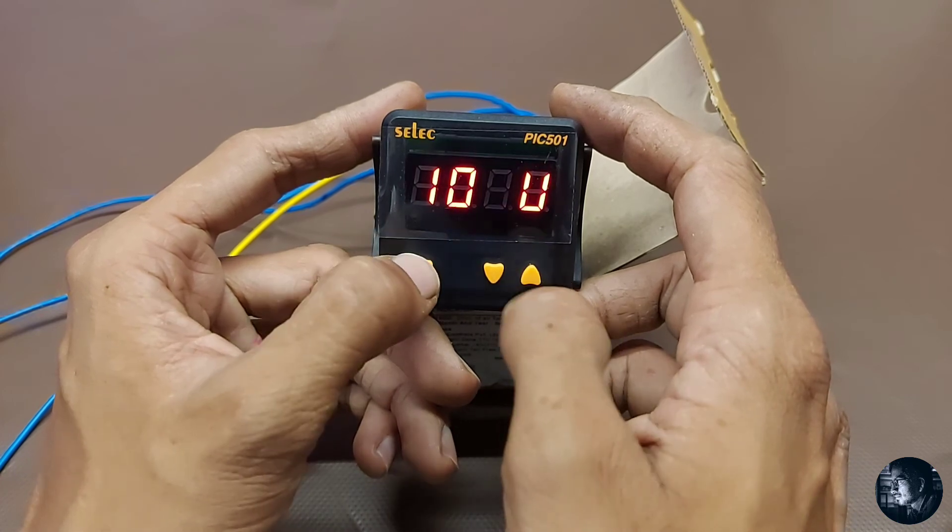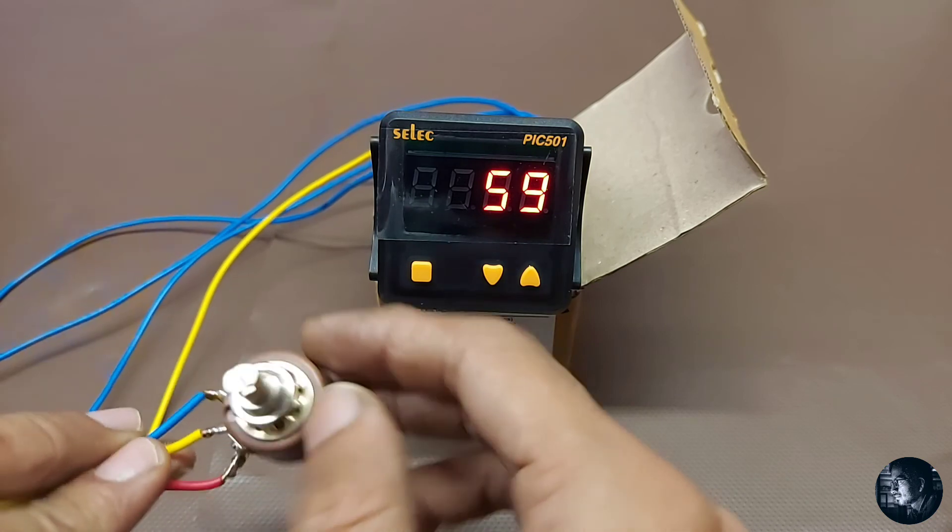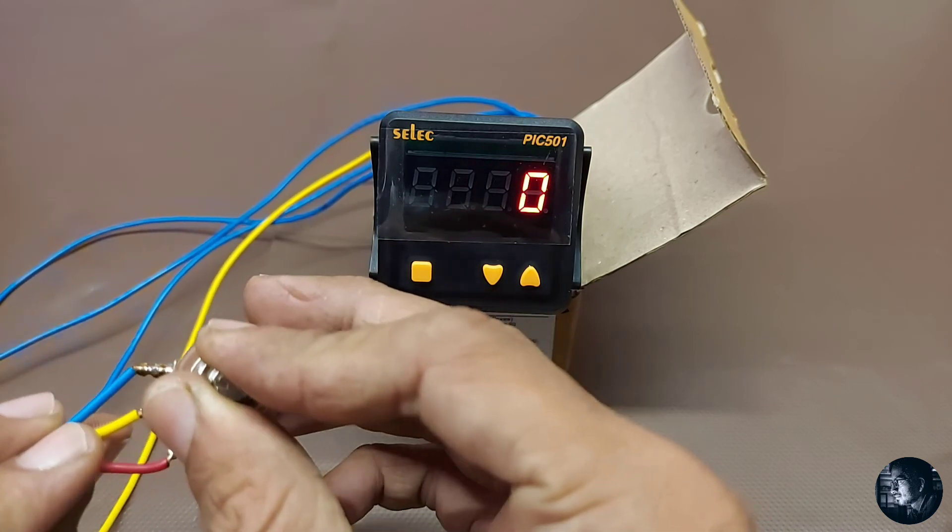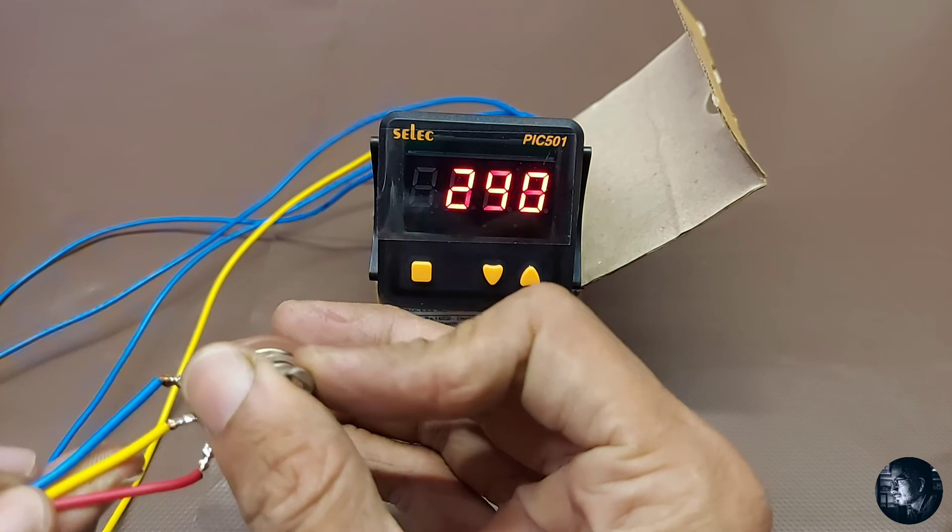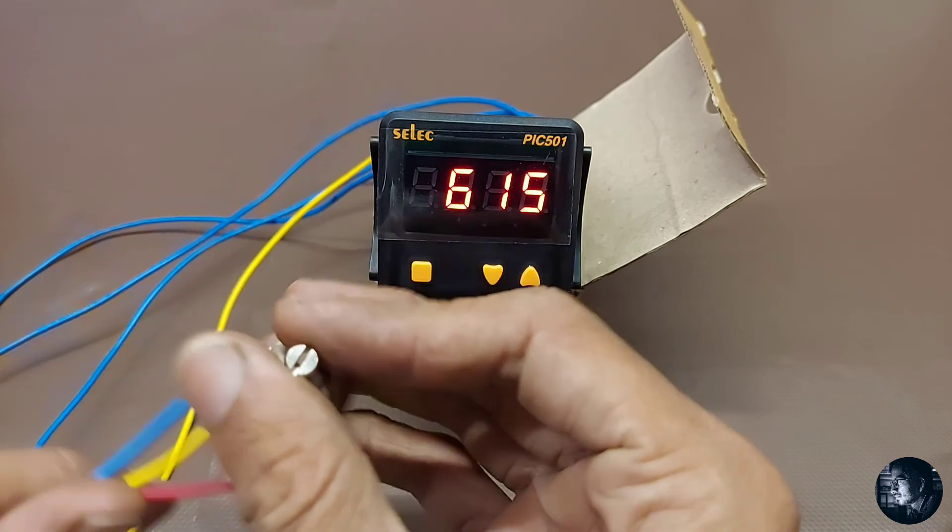That's all for the programming. Now let's give the analog voltage and check. From this port I will vary the input. It shows 615 at 6V because I am giving 6V from the portable supply.